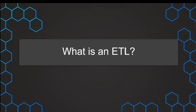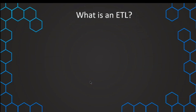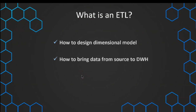Now that we've learned about how we model our data, we are ready to go to how this can be implemented using our ETL process. We want to start with the question: what is an ETL and how can we understand that? Now that we know how we can design our dimensional model, we are ready to bring in the data from our sources, model that with our ETL, and bring it into our data warehouse.